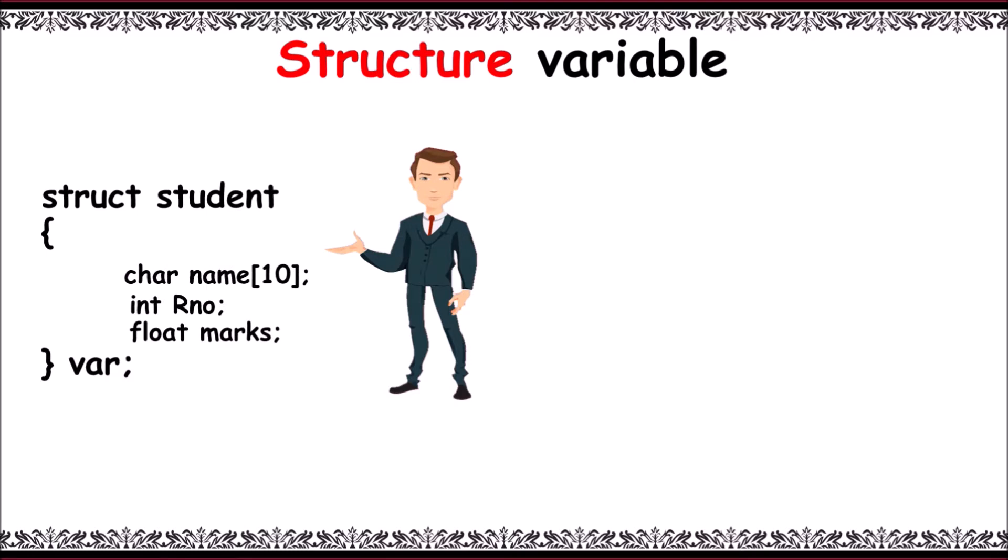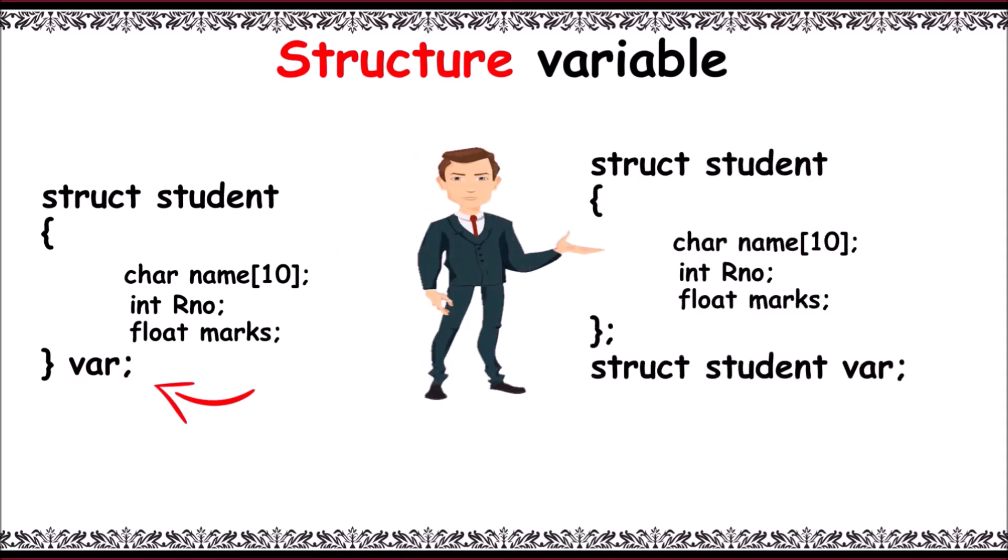One: while writing a structure, at the end of it after braces, write the variable name and end with a semicolon. Second method: after declaring a structure, write struct space student space var. For example: struct student var.